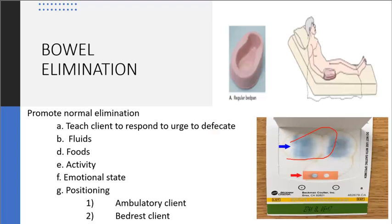Encourage fiber, fruits, vegetables, and grains in the diet. Encourage exercise and ambulation, as this helps maintain muscle tone. Also teach the client that stress affects the autonomic nervous system, which controls peristalsis, so they need to manage stress and control their emotional state.